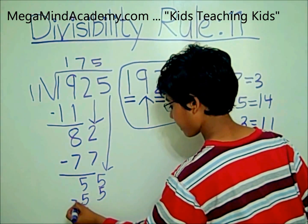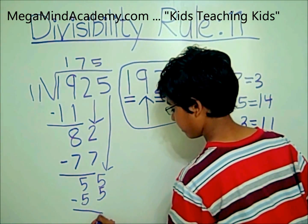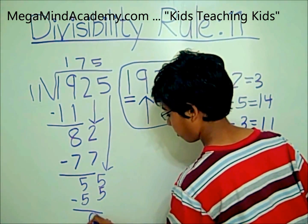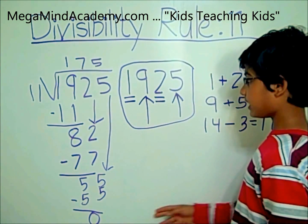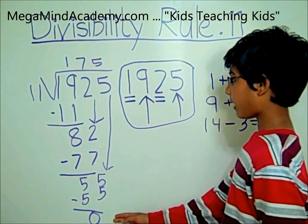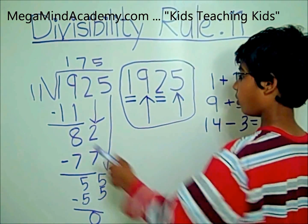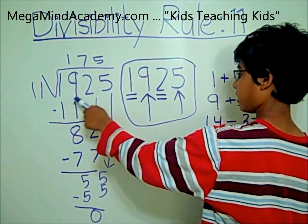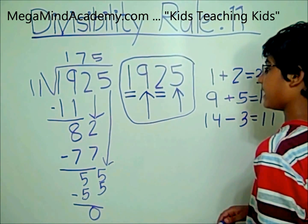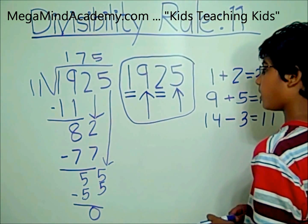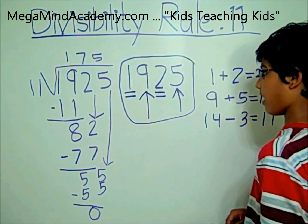Now you bring the other 5 down and it becomes 55. And 11 times 5 equals 55, so you subtract and you get 0. Since 0 is the remainder, 1,925 is divisible by 11.